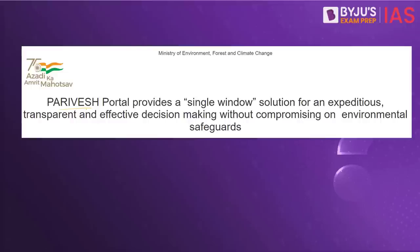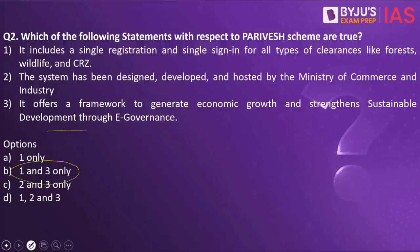Let us understand what is the Parivesh portal. Parivesh stands for Proactive and Responsive Facilitation by Interacting and Virtuous Environmental Single Window Hub. This is an initiative of the Ministry of Environment, dealing with forest, wildlife and CRZ matters. The second statement — that the system was designed, developed and hosted by the Ministry of Commerce and Industry — is wrong, because Parivesh is a portal developed by the Ministry of Environment with respect to wildlife, coastal regulations and so forth.